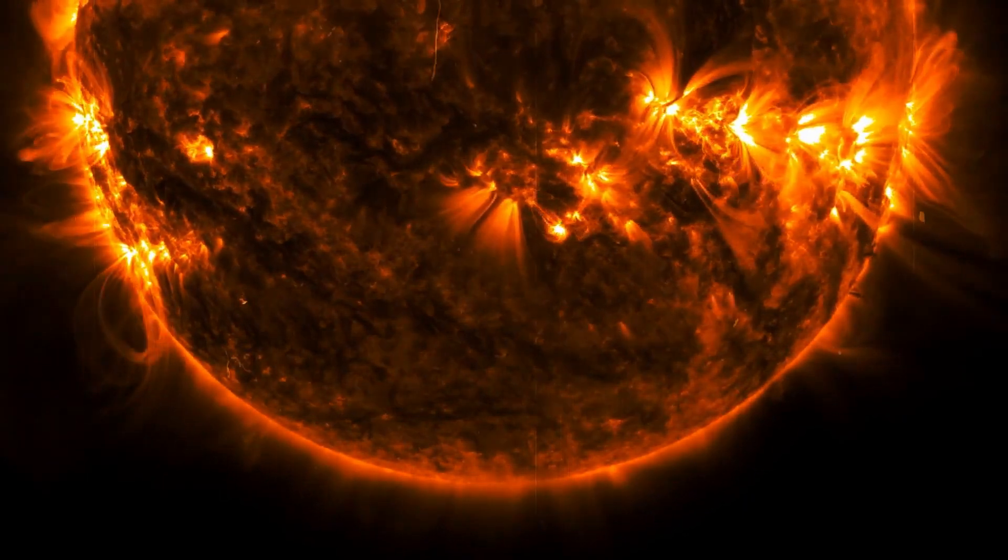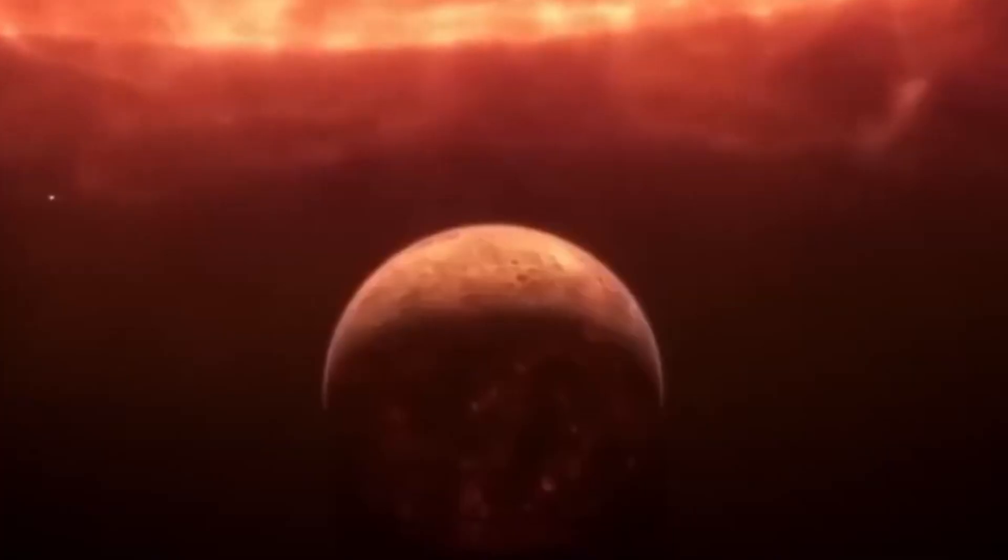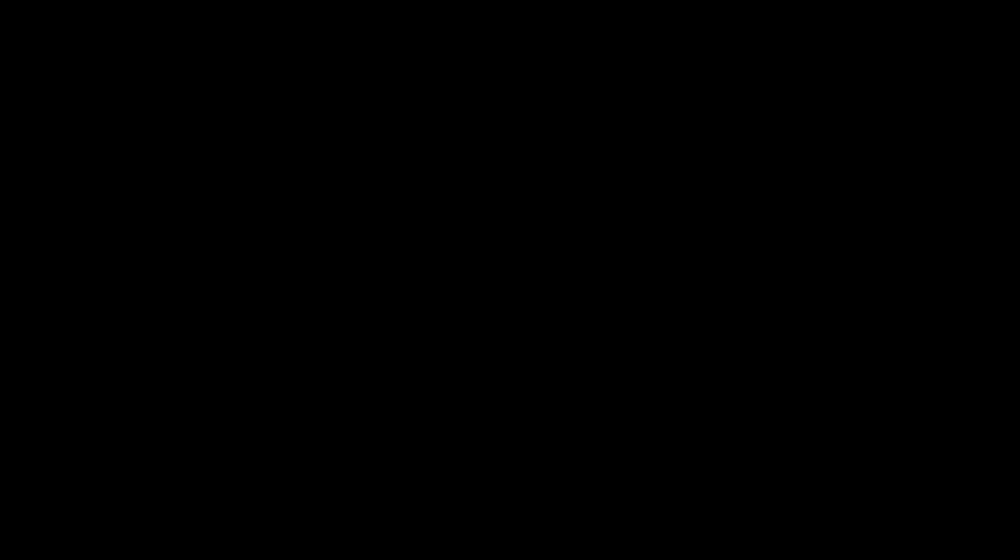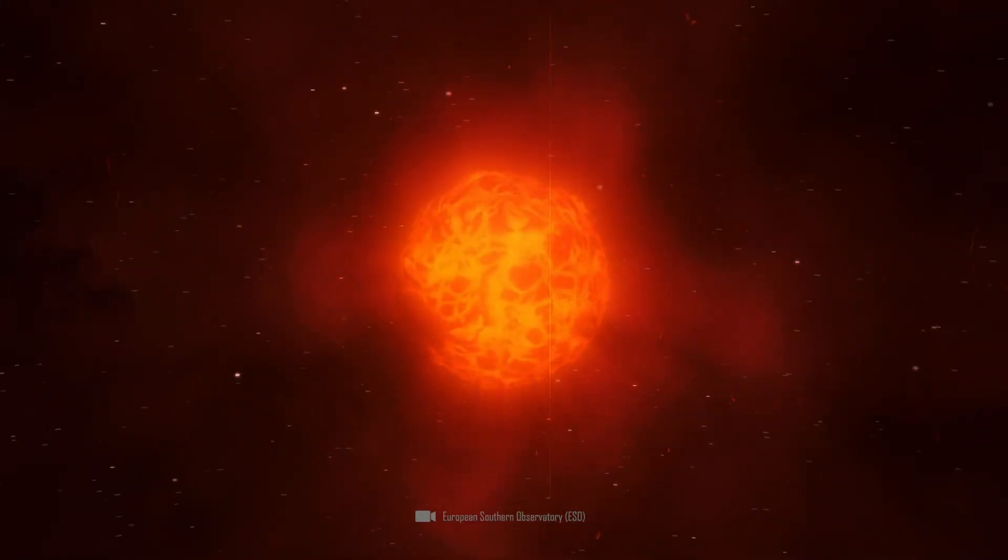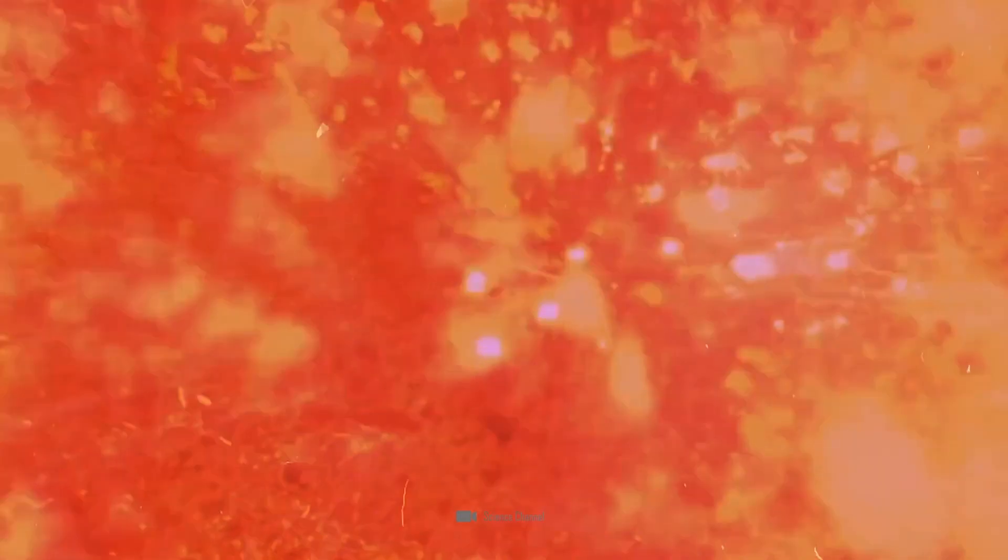Betelgeuse experiences two cycles of light and dark. The second cycle lasts around 100 days and happens roughly every five years. During this cycle, it is anticipated that the star's outer shell will expand and shrink, altering the star's orbit and average temperature at each stage.